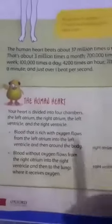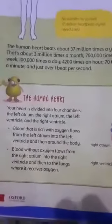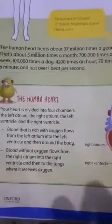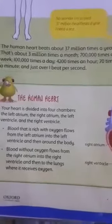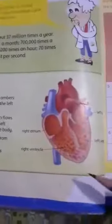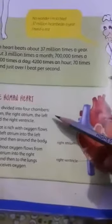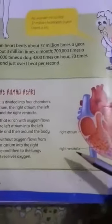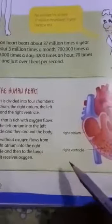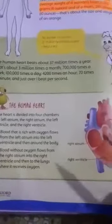After the chambers of the heart — there are four chambers: the right atrium, left atrium, right ventricle, and left ventricle. The upper side is the atrium, and the lower side is the ventricle.